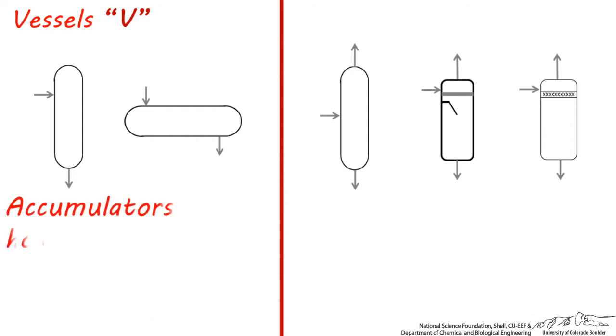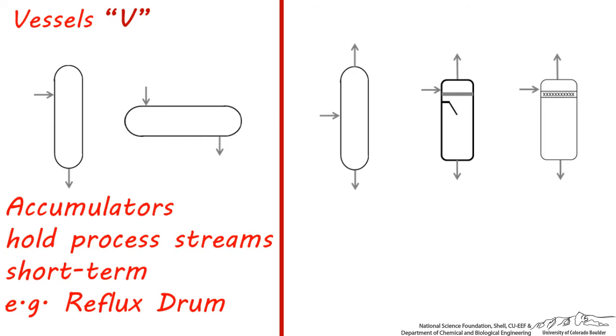Accumulators are a type of very temporary storage tank designed to hold some volume of a process stream short-term before it's sent to another unit. These tanks are sometimes also used for overflow or to hold temporary volume surges. An example of an accumulator is a reflux drum, which holds liquid reflux after it comes out of the condenser and before it's sent back to the distillation column.